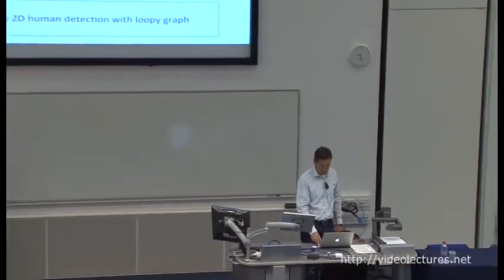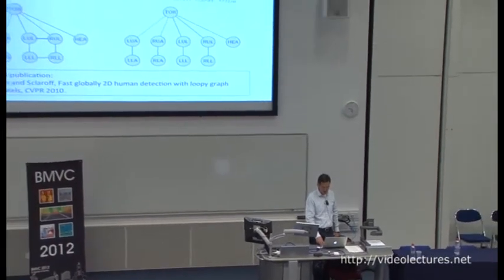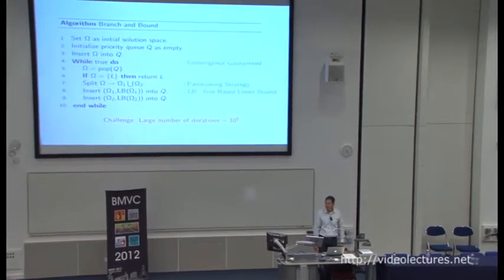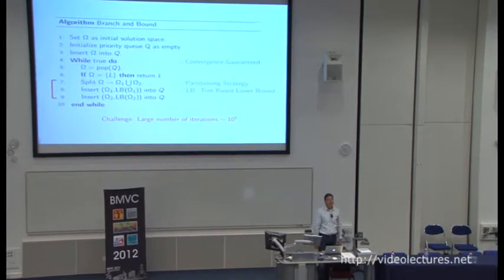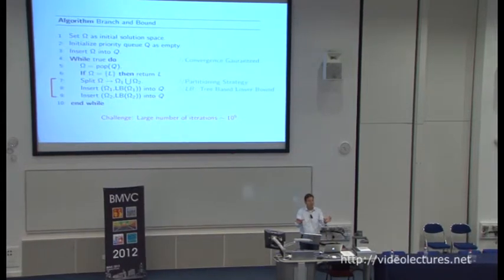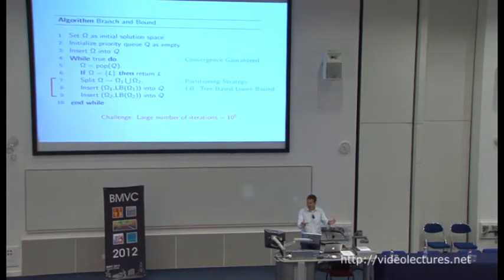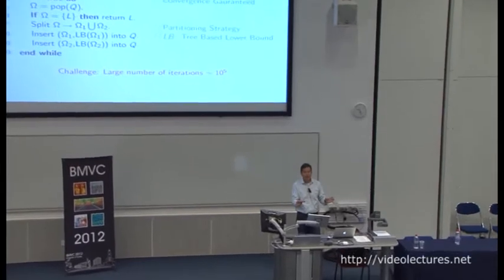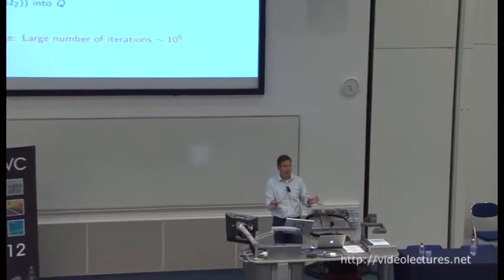The key thing is that there's an inner loop where we do splits of the search space. As we split the search space we need to recompute the lower bound. The challenge is that this inner loop can be executed many times, so efficiency of computing the lower bound is critical.